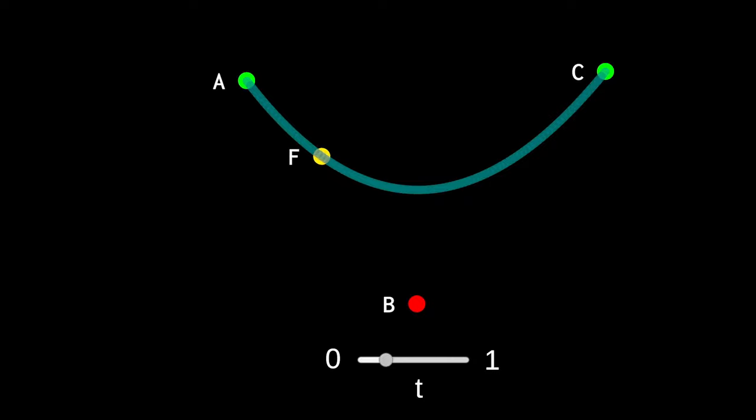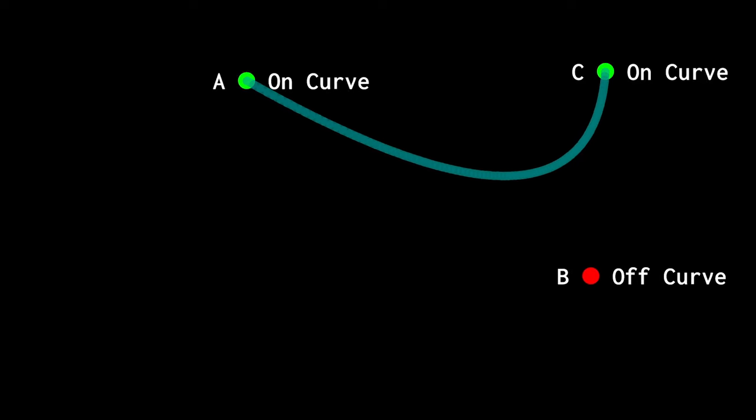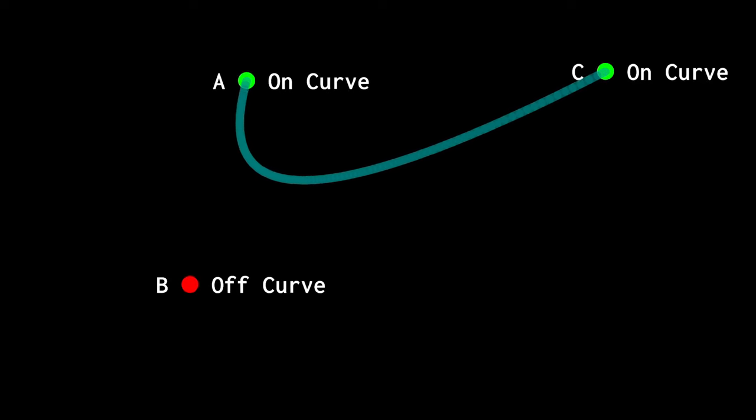You can see that the end points A and C lie on the Bezier curve. The middle point B is off the curve. I've colored the on curve points in green and the off curve point in red.